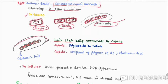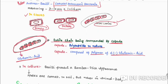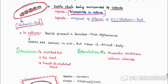The chain of bacilli is surrounded by a capsule made up of D-glutamic acid — the capsule is polypeptide in nature, composed of a polymer of D-glutamic acid. In culture, the bacillus shows a bamboo stick appearance. Spores are formed in soil but never in the animal body.